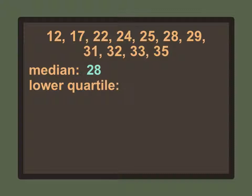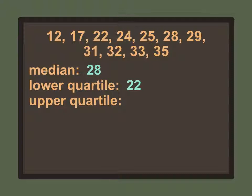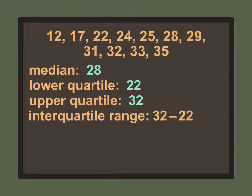For the lower quartile, we look at the numbers between 12 and 25. The middle number in that range is 22, so our lower quartile is 22. For the upper quartile, we look at the numbers between 29 and 35, and the middle number is 32. So our upper quartile is 32. The interquartile range is upper minus lower: 32 minus 22 equals 10.